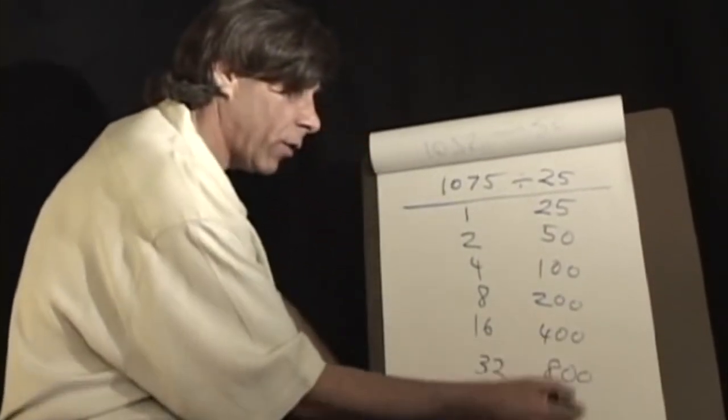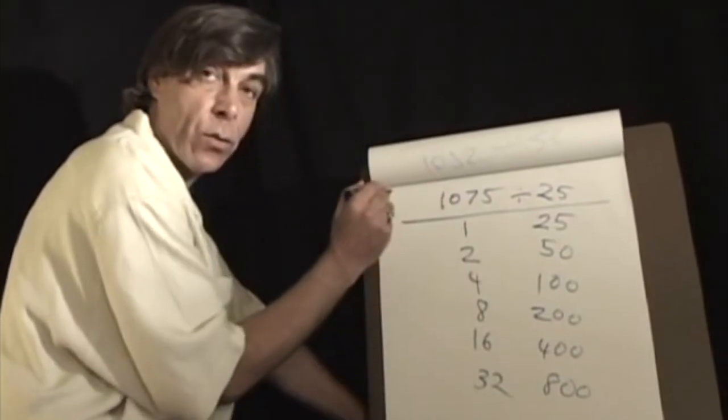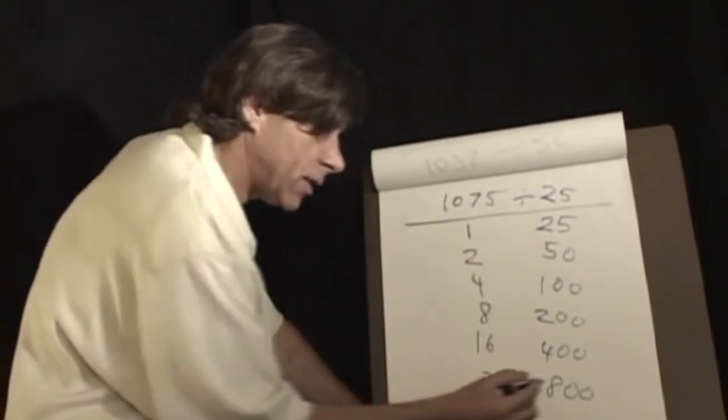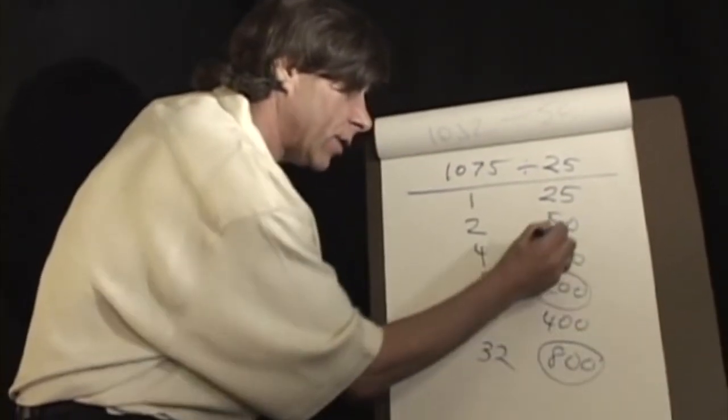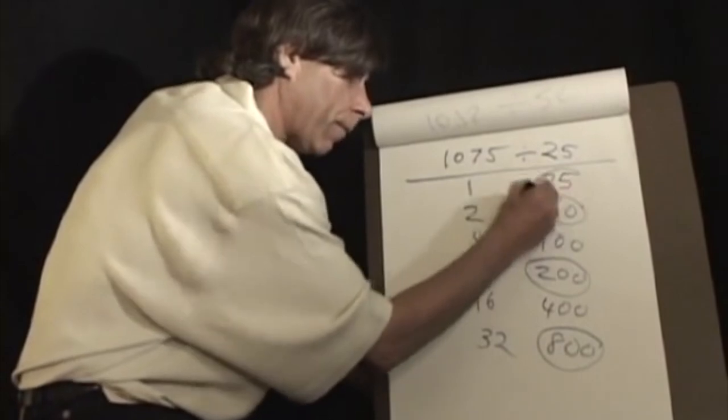I stopped there because if I went further, it's sixteen hundred, which is larger than one thousand seventy-five. And if I know that one thousand seventy-five is eight hundred, plus two hundred, make a thousand, and fifty, and twenty-five.